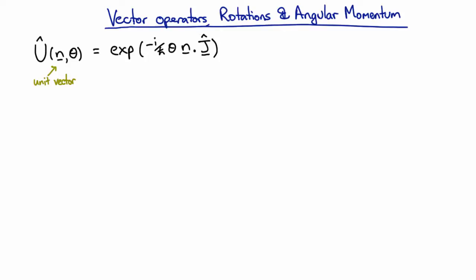This is the angular momentum, which is a vector operator. In quantum mechanics, a vector operator is a set of operators that transform like a three-vector transforms under rotations.